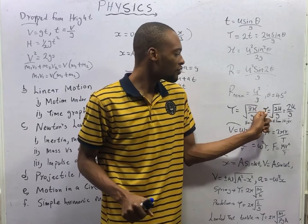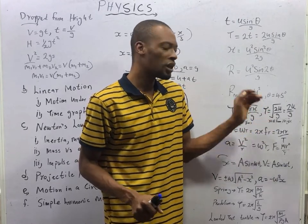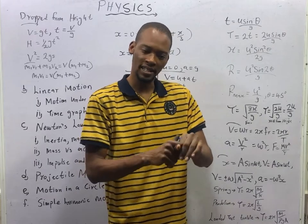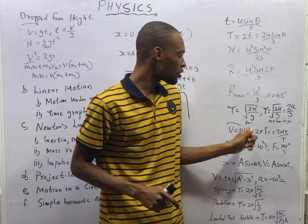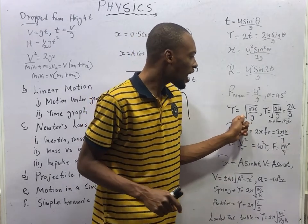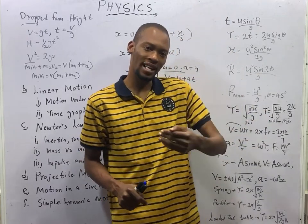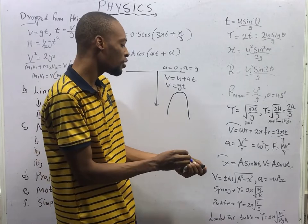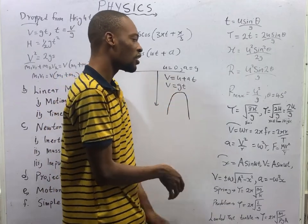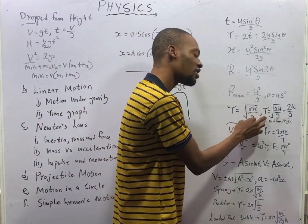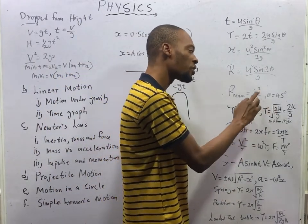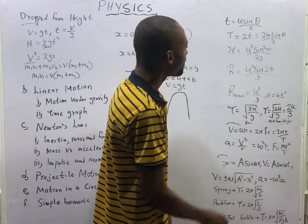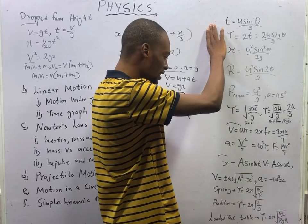For a body thrown up and allowed to come down, when you are given maximum height H, the total time of flight is the square root of 8H over G. If the object only comes down from a height — not going up first — the time of flight is the square root of 2H over G. These are the formulas we already explained.